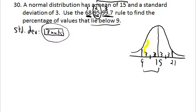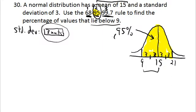By the 68-95-99.7 rule, 95% of the values lie between 9 and 21 because there are two standard deviations on each side. So 95% of the area — shown in yellow — lies within two standard deviations of the mean. However, the problem didn't ask about that. They asked for the area below 9, so we need to figure some things out.